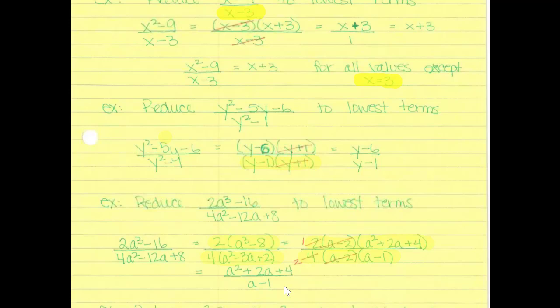Now reduce: 2 over 4 reduces to one-half, and the a minus 2 factors cancel. We're left with a squared plus 2a plus 4 over 2 times a minus 1. The restrictions are a cannot equal 2 and a cannot equal 1, since those values force the original denominator to zero.